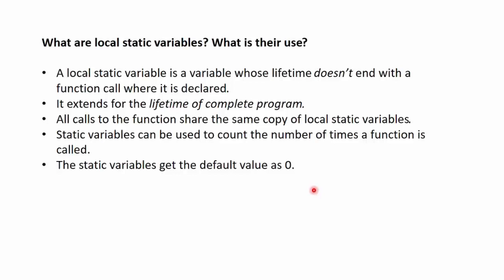Next question: what are local static variables and what is their use? A local static variable is a variable whose lifetime doesn't end with the function call where it is declared — it extends for the lifetime of the complete program. All calls to the function share the same copy of local static variables. Static variables can be used to count the number of times a function is called. Static variables get the default value of zero.